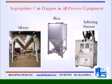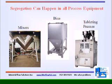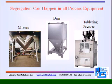Segregation can occur in all process equipment: blenders, bins, tablet presses, belts, etc. It is important to know the pattern and the magnitude. In addition, the potential to segregate must be tied to the process. Any material will separate if we add enough stimuli. The real question is: will the stimulus of passing material through my process cause segregation, and how much?